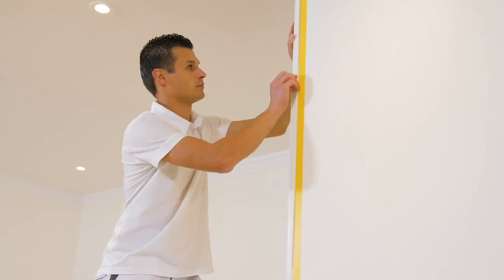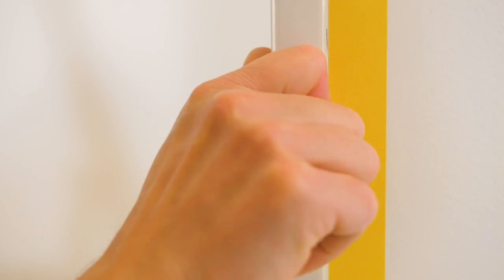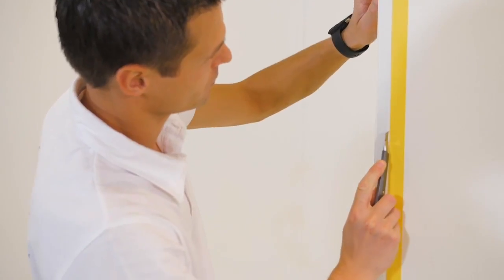Firmly press the profile guard onto the wall. Cut the tape and remove.